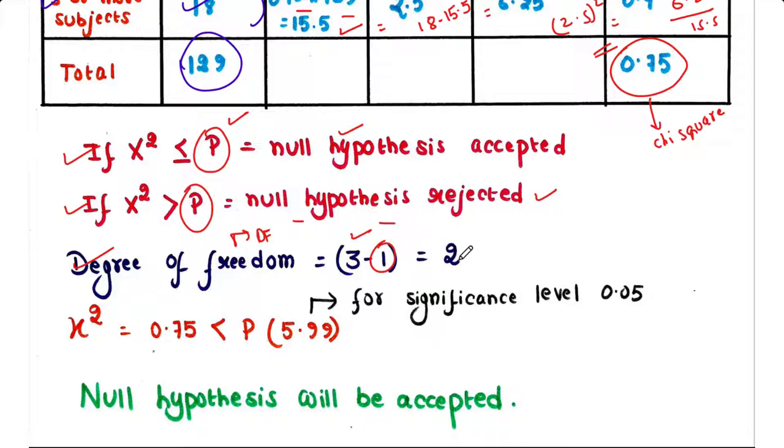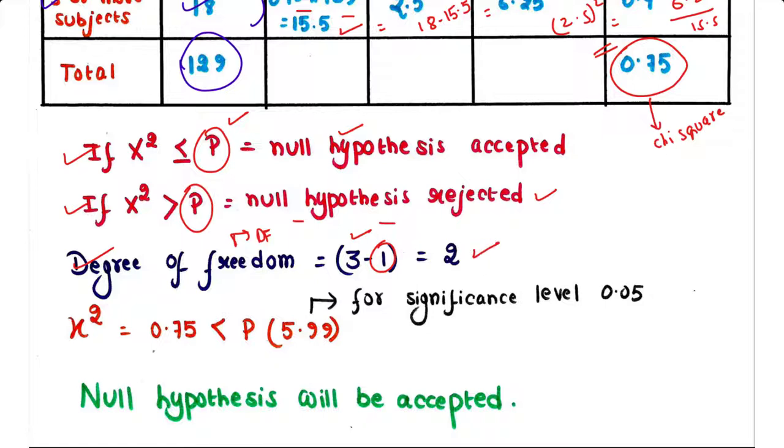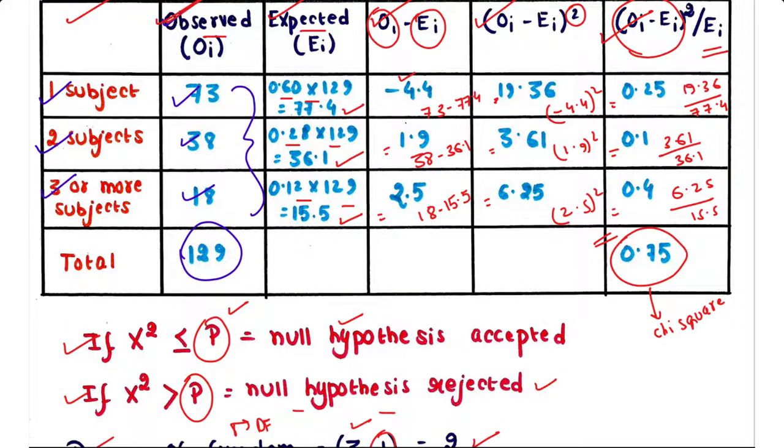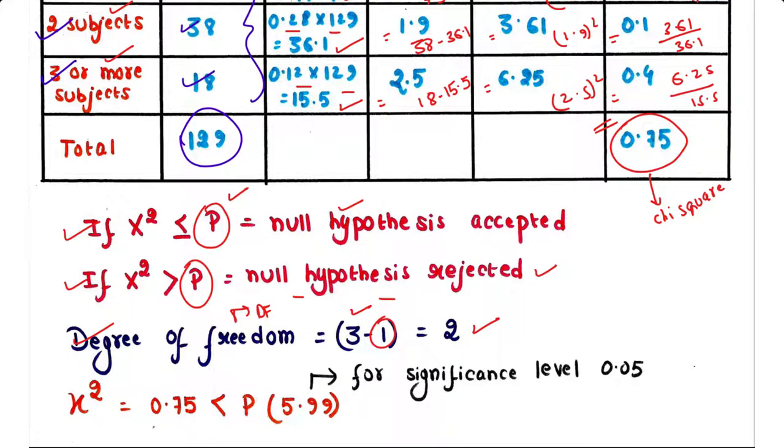Therefore, for the above example, degrees of freedom equals 3 minus 1 equals 2, since we have 3 categories here: students fail in one subject is the first category, students fail in two subjects is the second category, students fail in three or more subjects is the third category.